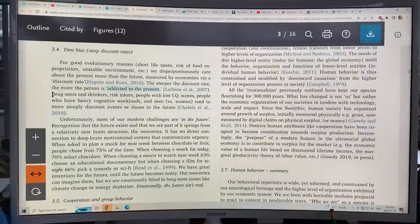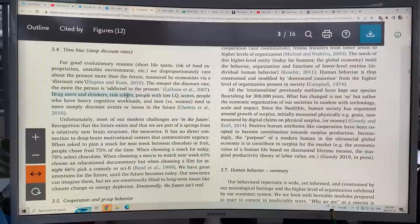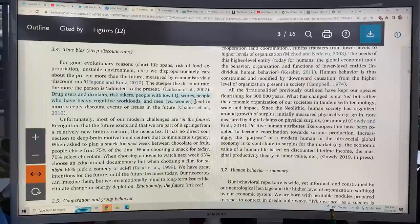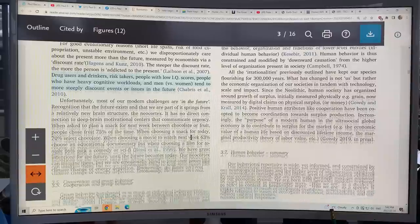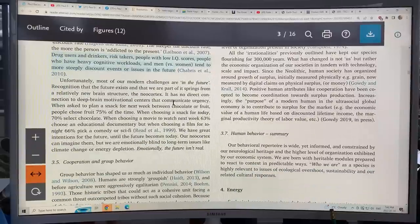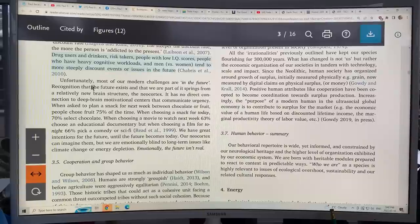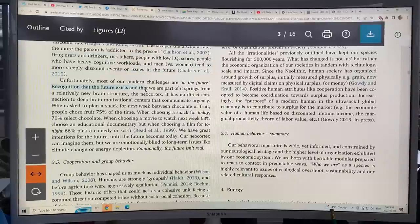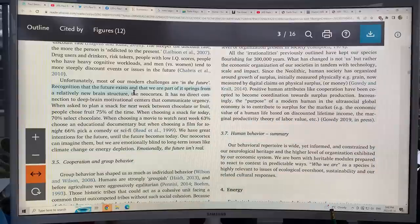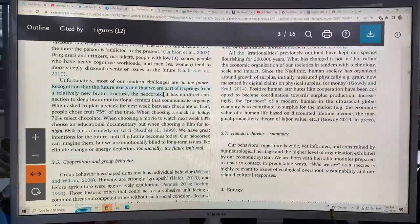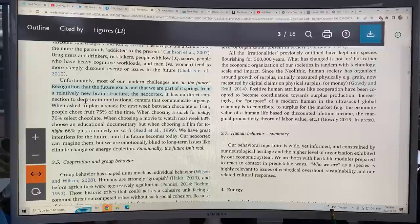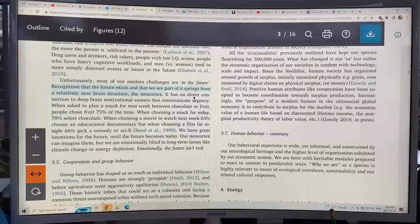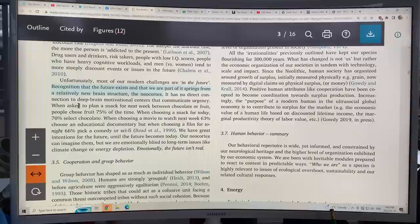Like think, for example, drug users and drinkers, risk takers, people with low IQ scores, people who have heavy cognitive workloads, men versus women. We steeply discount events and issues in the future. But unfortunately, most of our modern challenges are in the future. Recognition that the future exists and that we are part of it springs from a relatively new brain structure called the neocortex. There's no direct connection of the neocortex to deep brain motivational centers that communicate urgency. And this is a great example.